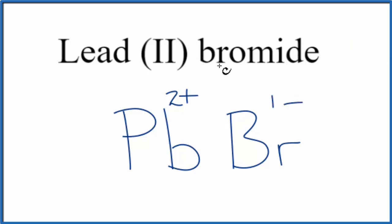So lead(II) bromide, this is a neutral compound. There's no ion written after it. Because it's a neutral compound and it's an ionic compound, these charges have to add up to 0. We need a net charge of 0.